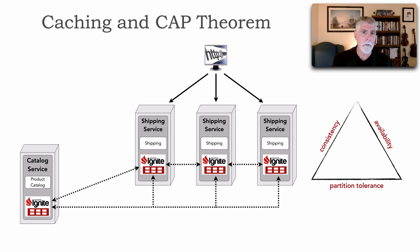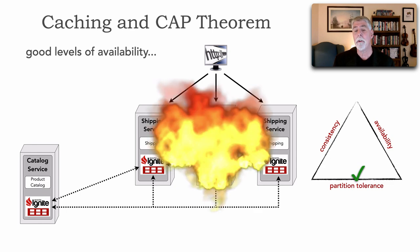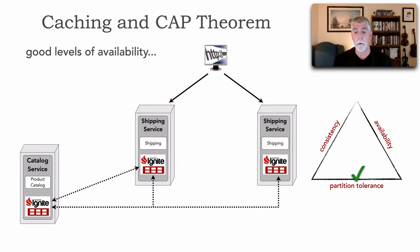As explained in lesson 111, because this is a distributed architecture, we have to have partition tolerance — the P part of CAP is a given. That leaves us with consistency or availability. Here, I've got really good levels of availability: I've got three different shipping services all containing the in-memory data grid. If I happen to lose the middle instance, I'm still fully operational and the user can retrieve all the data — demonstrating good levels of availability.